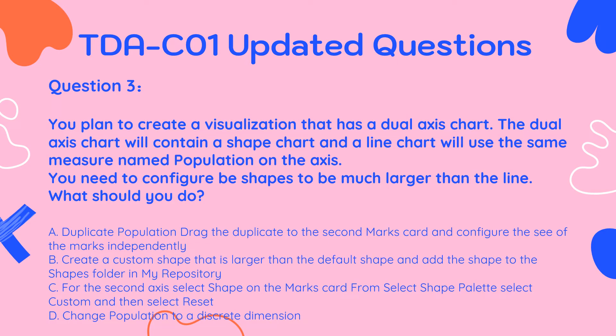Question 3. You plan to create a visualization that has a dual axis chart. The dual axis chart will contain a shape chart and a line chart, and will use the same measure named Population on the axis. You need to configure the shapes to be much larger than the line. What should you do?